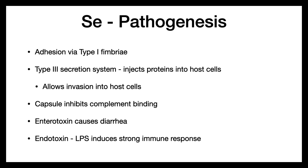The capsule also inhibits complement binding, protecting it from complement, which is part of your immune system. It also has an enterotoxin that can cause diarrhea. Its cell wall has lipopolysaccharide in the outer membrane — when this is released, it acts as an endotoxin and causes a strong immune response. These things all combine to make you feel pretty miserable, but after two to seven days, your body will get control of this and you'll feel better.